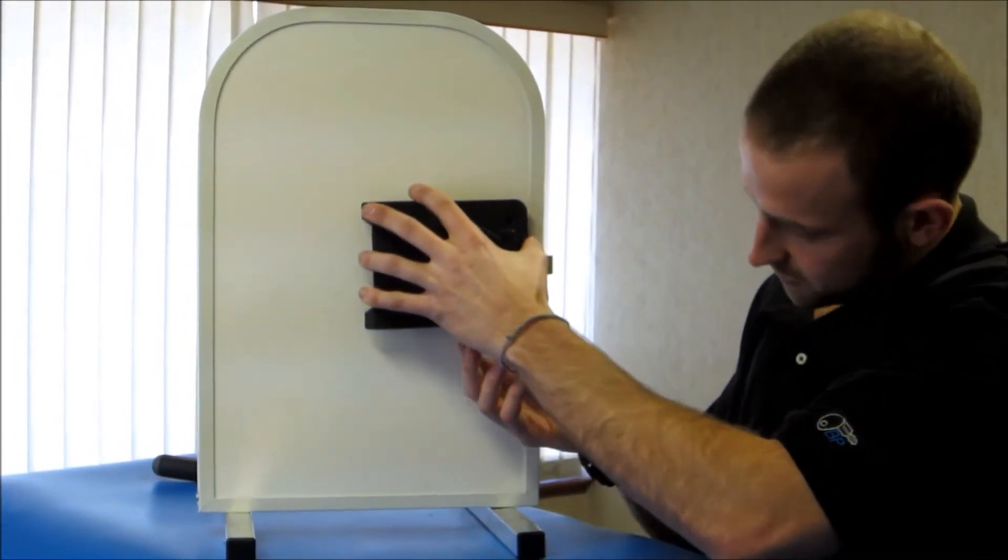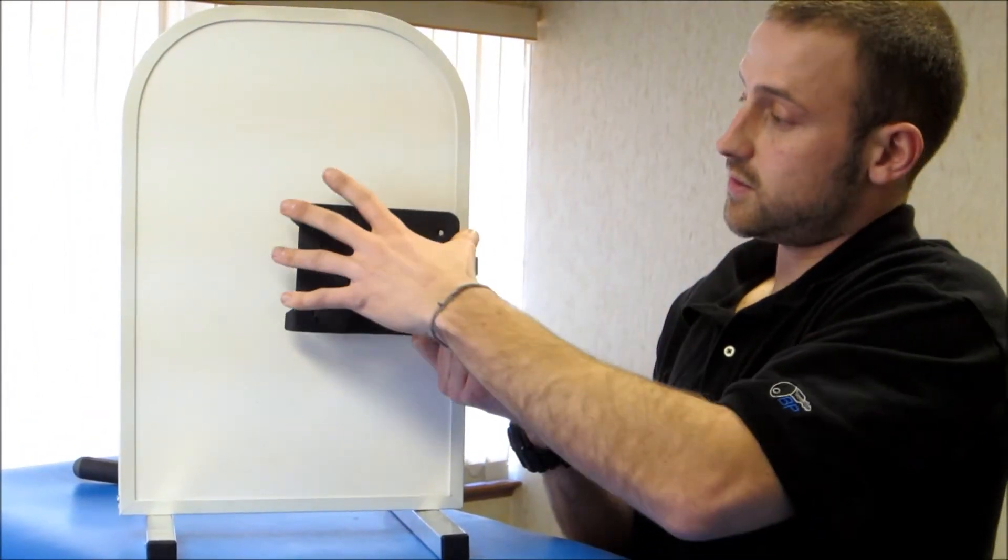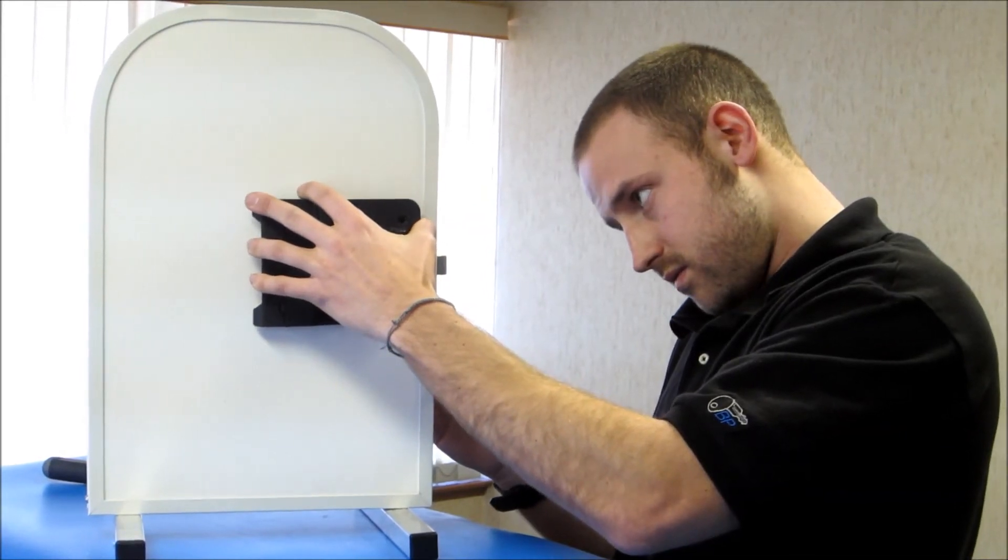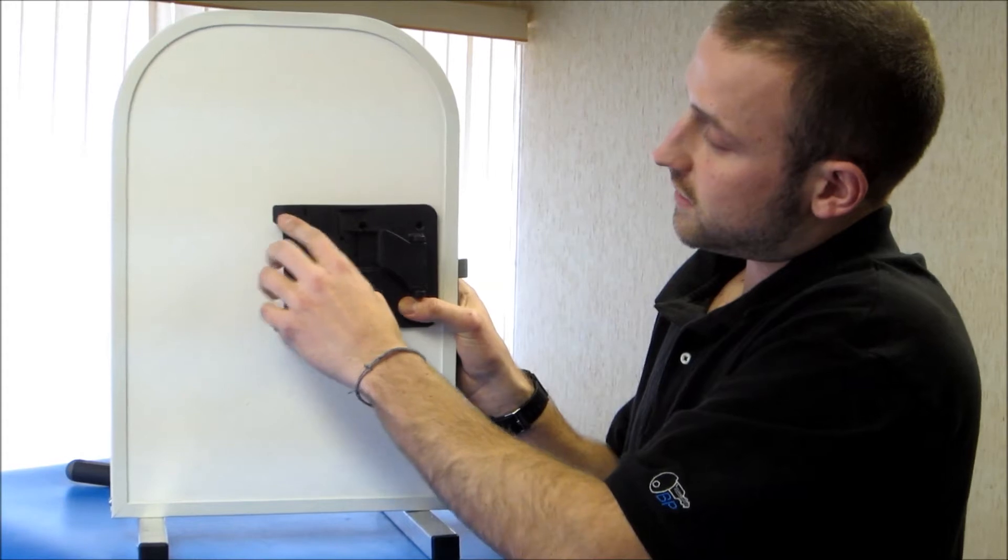You want to line up your deadbolt in the unlocked position with the two red circles aligned. Place it on there like so.